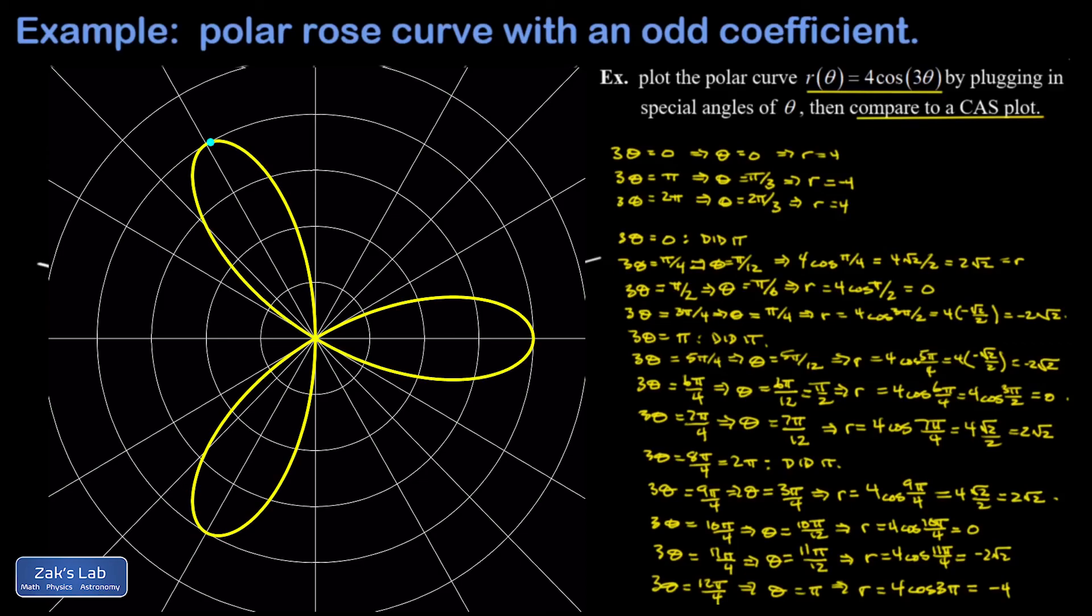The other key point to take away from this is that a rose curve with an odd coefficient of theta, that coefficient tells you how many petals it's going to have. So this one had a three in there and it has three petals.